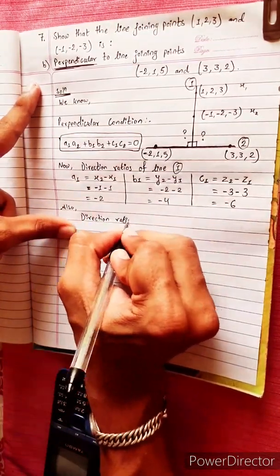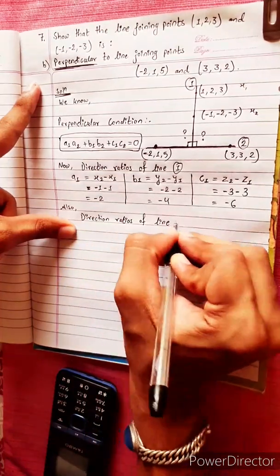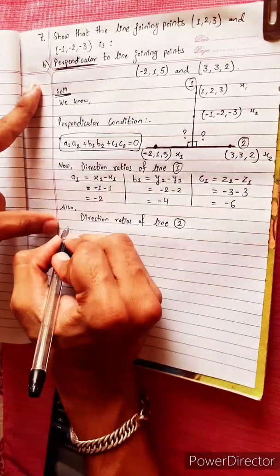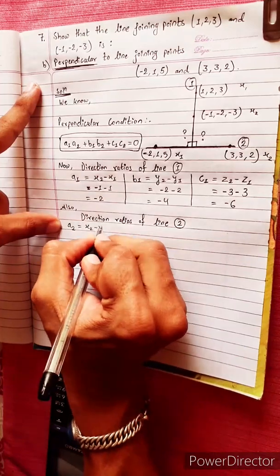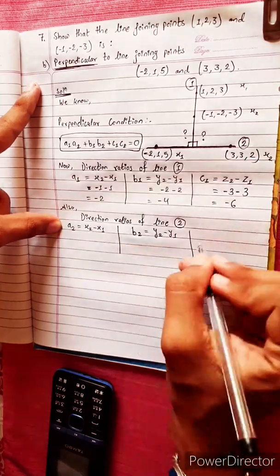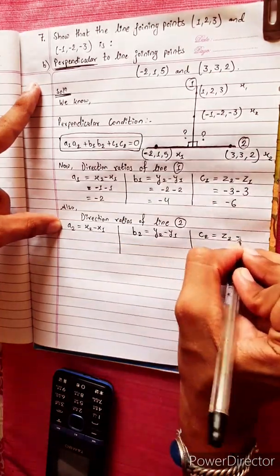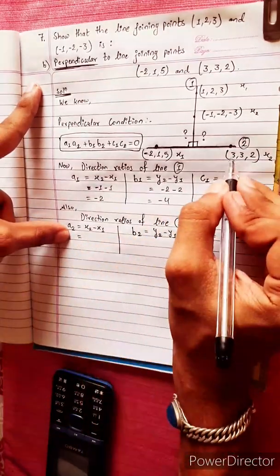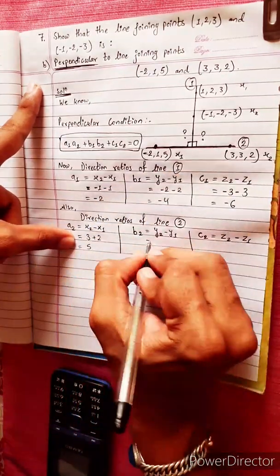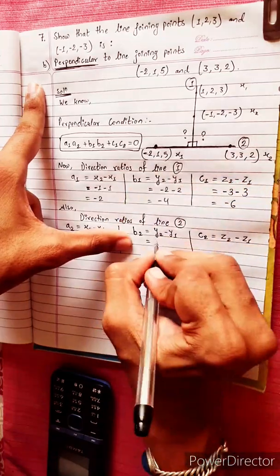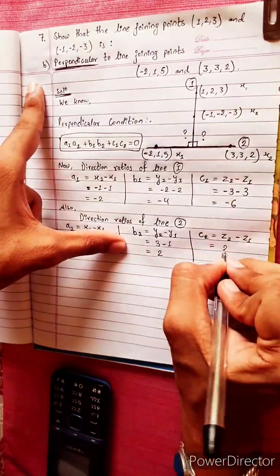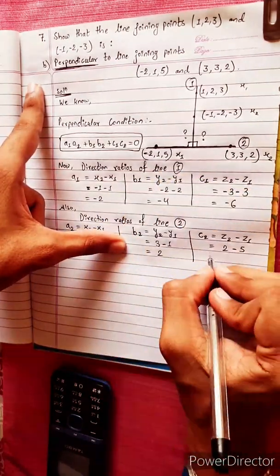Direction ratios of Line 2: Let the points be (X1, Y1, Z1) and (X2, Y2, Z2). So A2 equals X2 minus X1, which gives 3 minus (-2) = 5. B2 equals Y2 minus Y1, which gives 3 minus 1 = 2. C2 equals Z2 minus Z1, which gives 5 minus (-3).